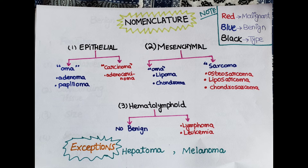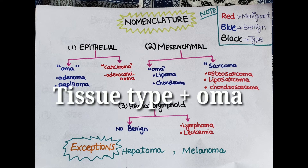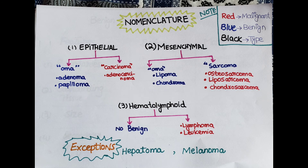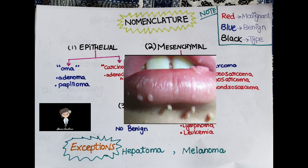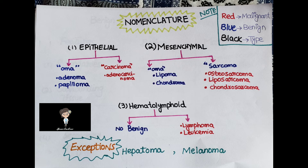For benign epithelial tumors, the suffix is '-oma,' so it is tissue type plus '-oma.' For example, a gland-forming tumor is an adenoma, and a squamous tumor is a papilloma. For epithelial malignancies, the suffix is '-carcinoma.' So a gland-forming malignant tumor is an adenocarcinoma, and a squamous cell malignant tumor is a squamous cell carcinoma.